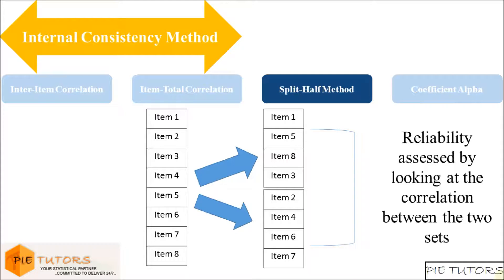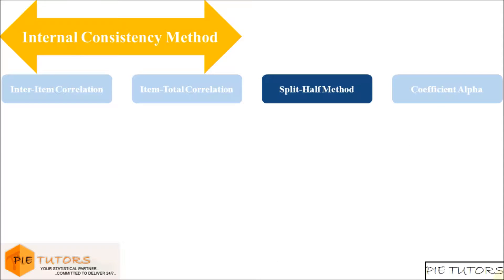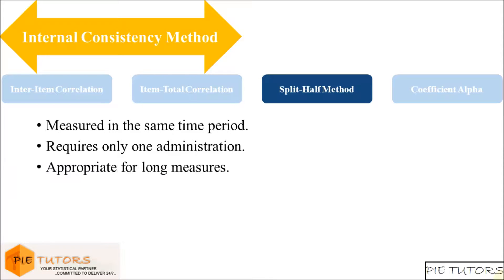So if people who score high on the first half also score high on the second half, then we can say that the internal consistency in the measure is high. In contrast to the test-retest and alternative form methods, the split half approach is usually measured in the same time period and it requires only one administration. This method is especially appropriate when the test is very long. The odd-even strategy is the most commonly used method to split the test into two.